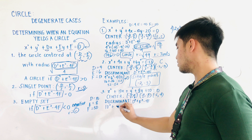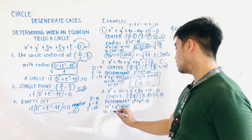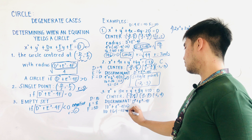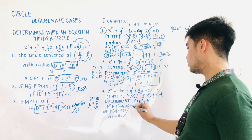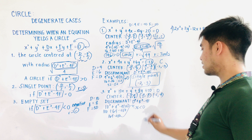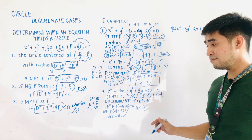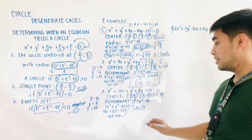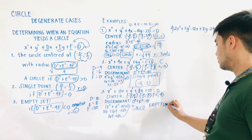Computing the discriminant: 10 squared plus 8 squared minus 4 times 50 equals 100 plus 64 minus 200 equals 164 minus 200, giving negative 36. Since negative 36 is less than zero, the equation is just an empty set.